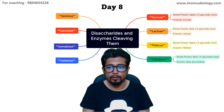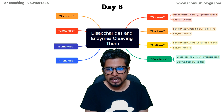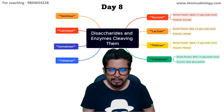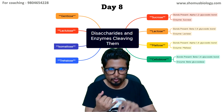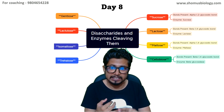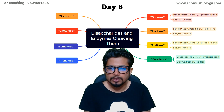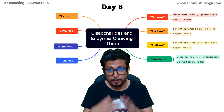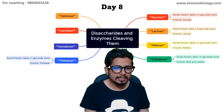Cellobiose has a beta 1-4 glycosidic bond, cleaved by beta-glucosidase. Remember: for sucrose the enzyme is sucrase, lactose — lactase, maltose — maltase, but for cellobiose the enzyme is beta-glucosidase, because it cleaves the beta 1-4 glycosidic linkage.